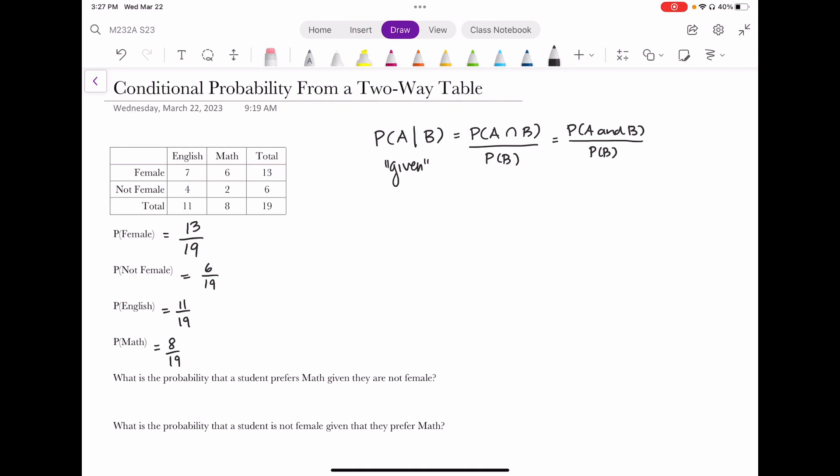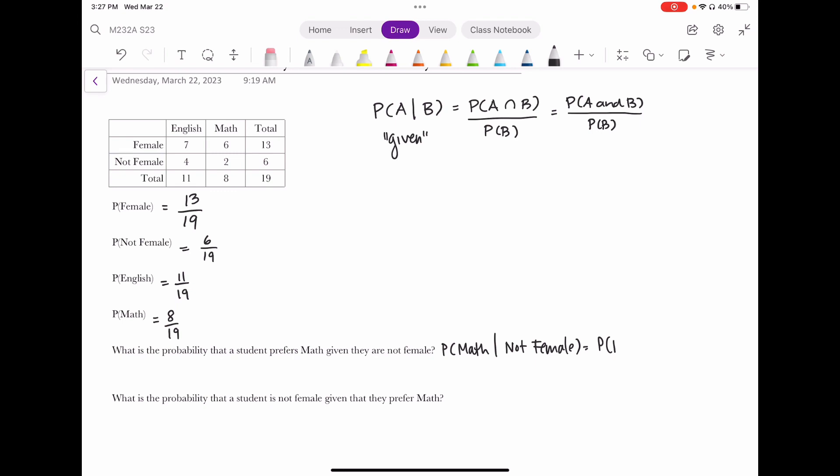So if I'm trying to talk about this next problem where I'm saying the probability that a student prefers math given that they are not female in statistical notation, that's the probability of math given not female. And if I was to try and use a formula for this, that would be to calculate the probability of preferring math and being not female, and then dividing that by the calculated probability of being not female. Typically, when you're doing math and not female, there's two of those people, two out of 19. And not female, we've already calculated with six out of 19. So when you're stacking those two into a fraction, you have a complex fraction.